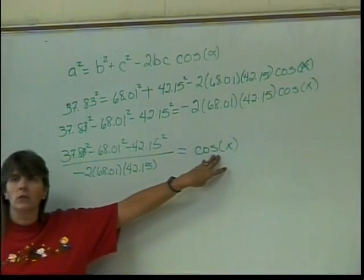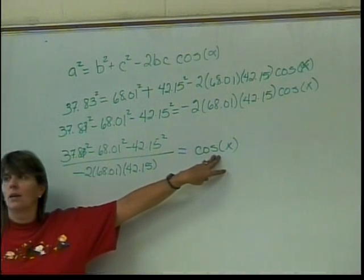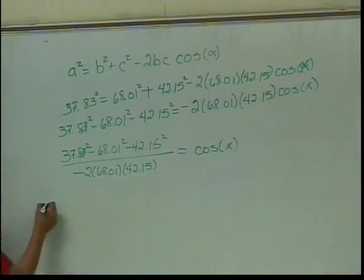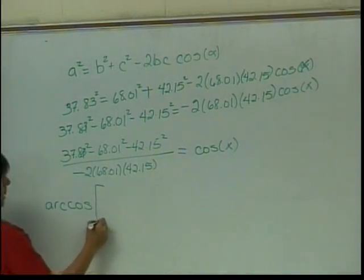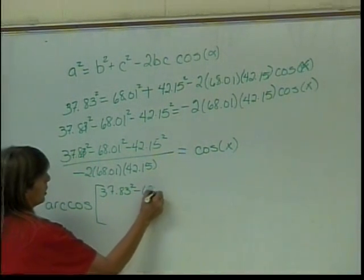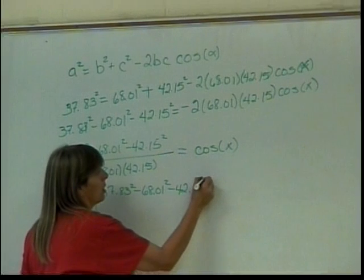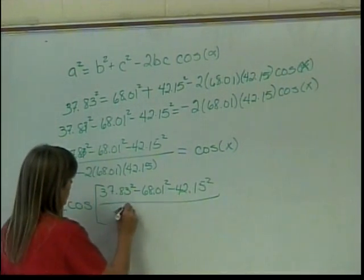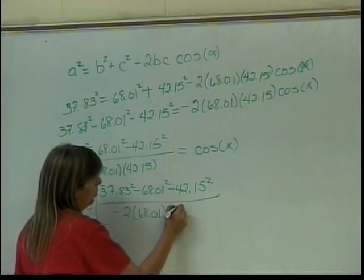How do I solve for x? Yeah. Take the inverse cosine. So the arc cosine of this mess. 37.83 squared minus 68.01 squared minus 42.15 squared, divided by negative 2 times 68.01 times 42.15.